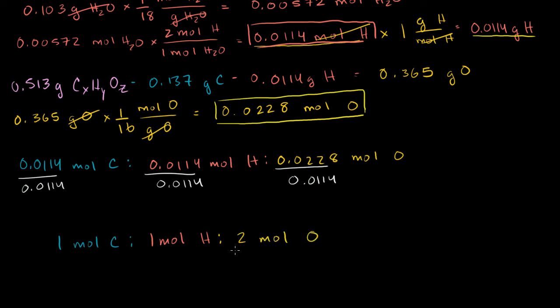That tells us our empirical formula for the mystery acid. We don't know the molecular formula, but we know the simplest whole number ratios: 1 carbon for every 1 hydrogen, and for every 1 carbon and 1 hydrogen, we have 2 oxygens. So the empirical formula is CHO₂. That is the empirical formula for our mystery acid. Hopefully you found that fun.